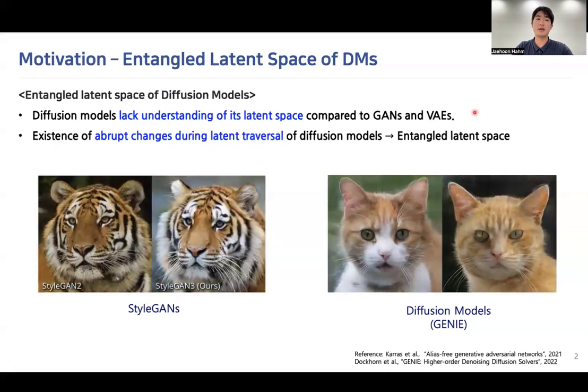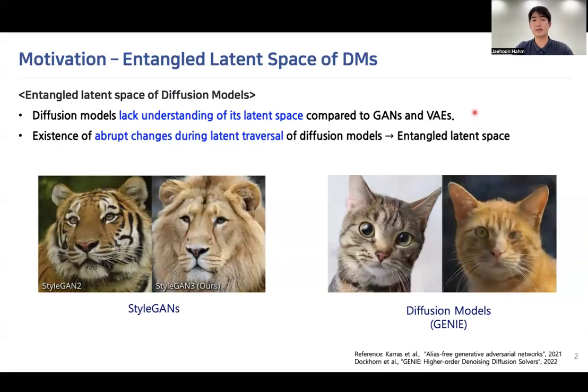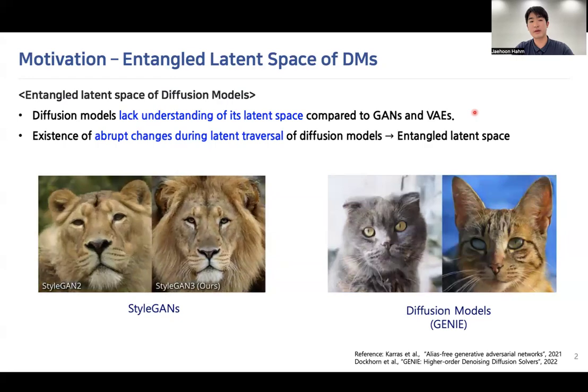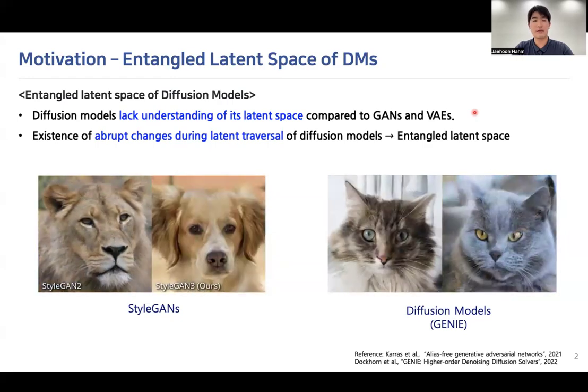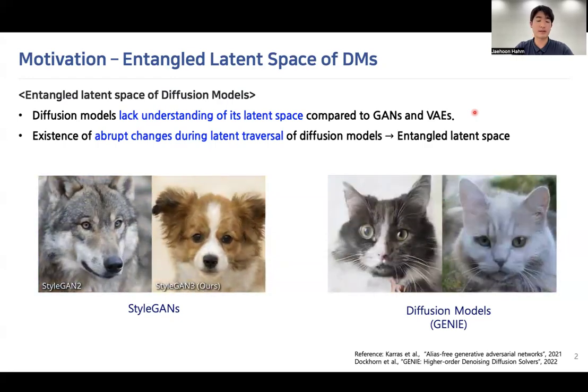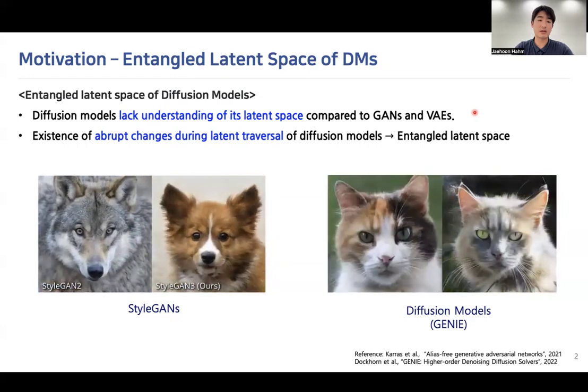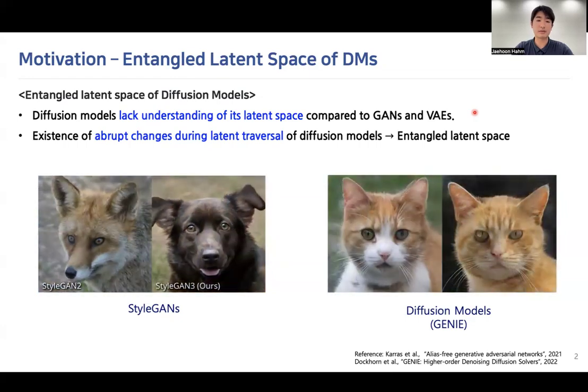Compared to GANs and VAEs, diffusion models lack understanding of its latent space. For example, in the video generated from StyleGANs, relatively smooth transitions between two distant concepts is possible.